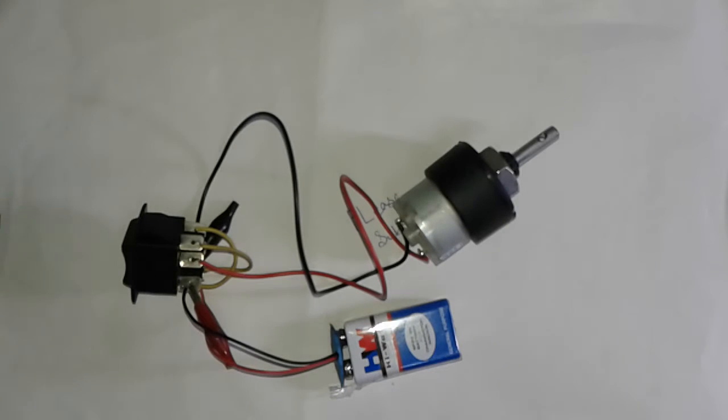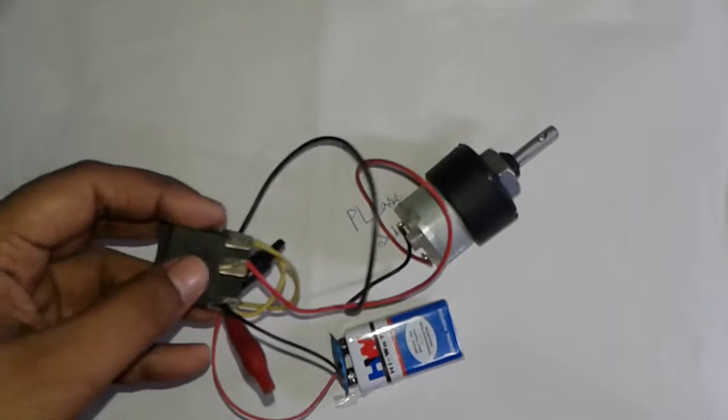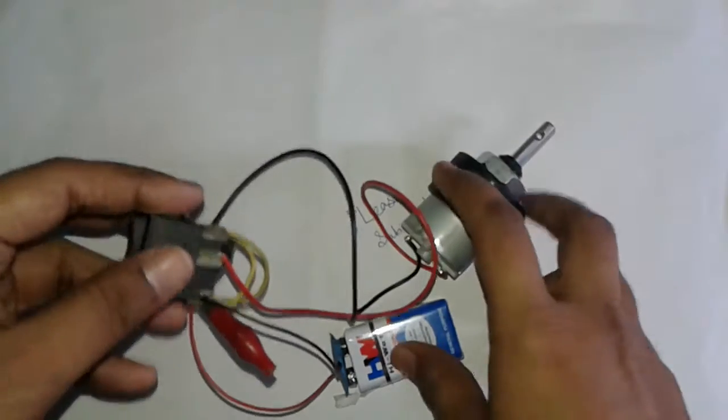Hello friends, in this video I am going to show you how to control the rotation of a DC motor by a DPDT switch. This is a DPDT switch, that is a DC motor, and that is a 9-volt battery.